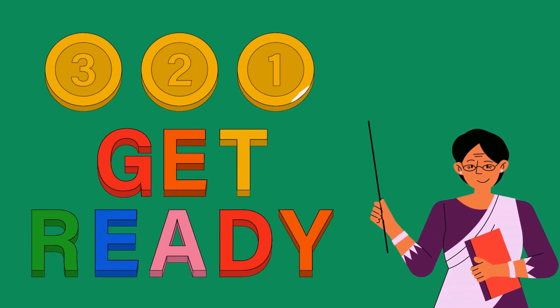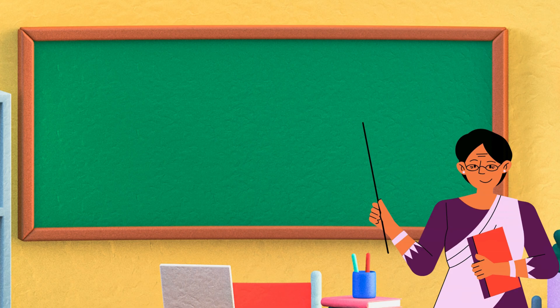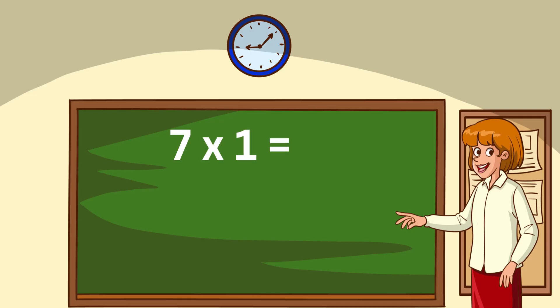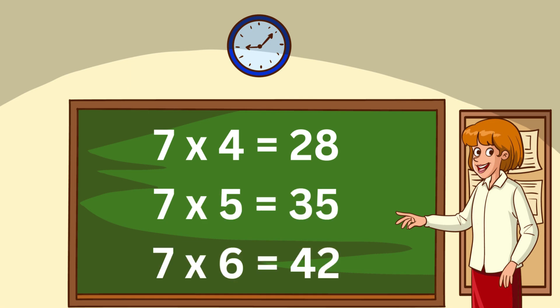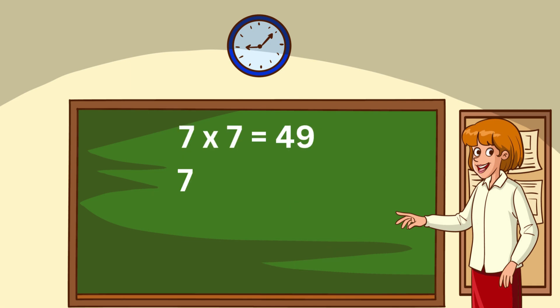Let's start. Repeat after me. 7 1s are 7. 7 2s are 14. 7 3s are 21. 7 4s are 28. 7 5s are 35. 7 6s are 42. 7 7s are 49. 7 8s are 56. 7 9s are 63. 7 10s are 70.